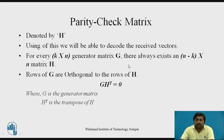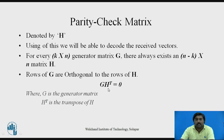Now let's start with the parity check matrix. It is denoted by H and it is used for decoding the received vectors which contain an error. For every K×N generator matrix, there always exists an (N−K)×N matrix H, which is the parity check matrix. The rows of the generator matrix and the rows of H matrix are orthogonal to each other. If you take the dot product of G and the transpose of H, that gives you zero.